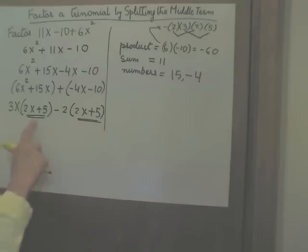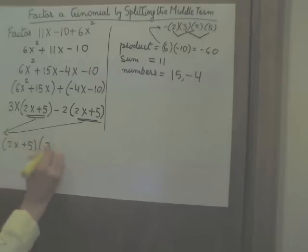So in the next step, we are going to factor this out. 2x plus 5 times, now from the first group, you already took out 2x plus 5 as a factor. What remains as a factor? 3x. Put that down. From the second group, you took out 2x plus 5 as a factor. What remains as a factor is minus 2. And there you are.